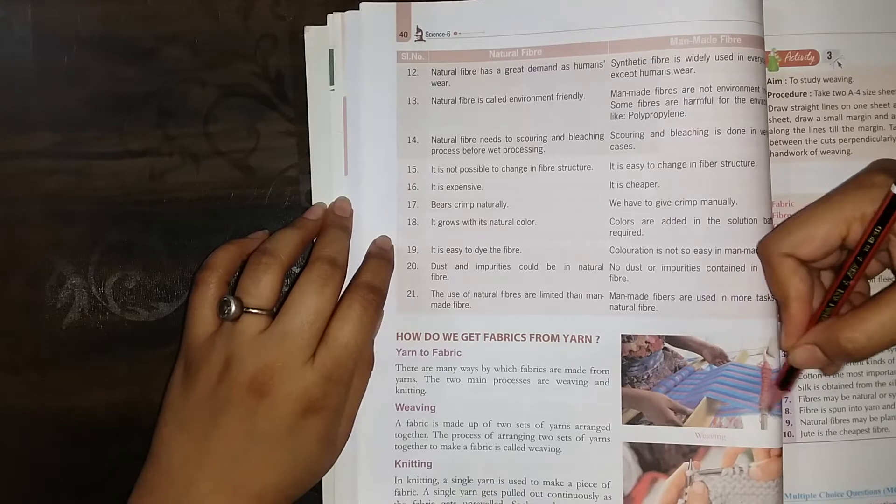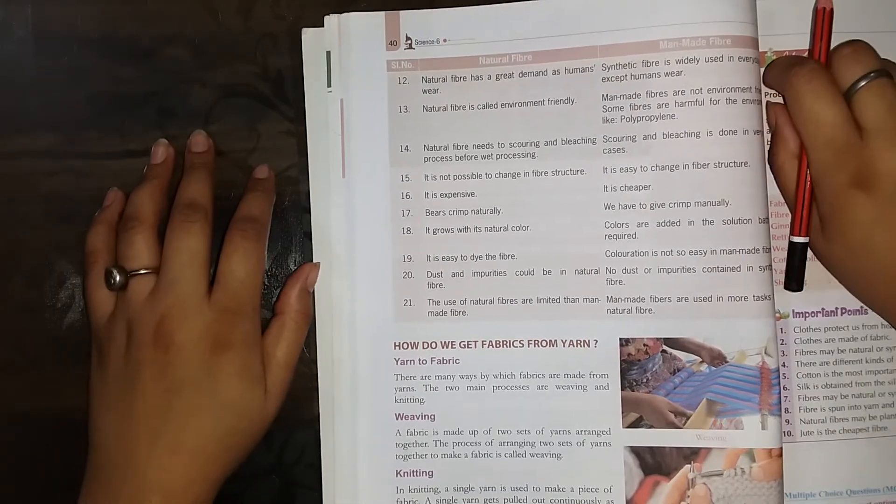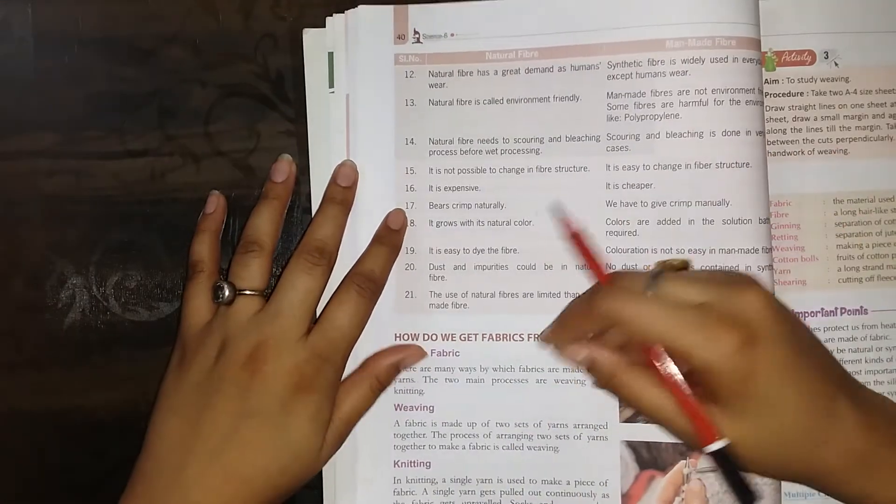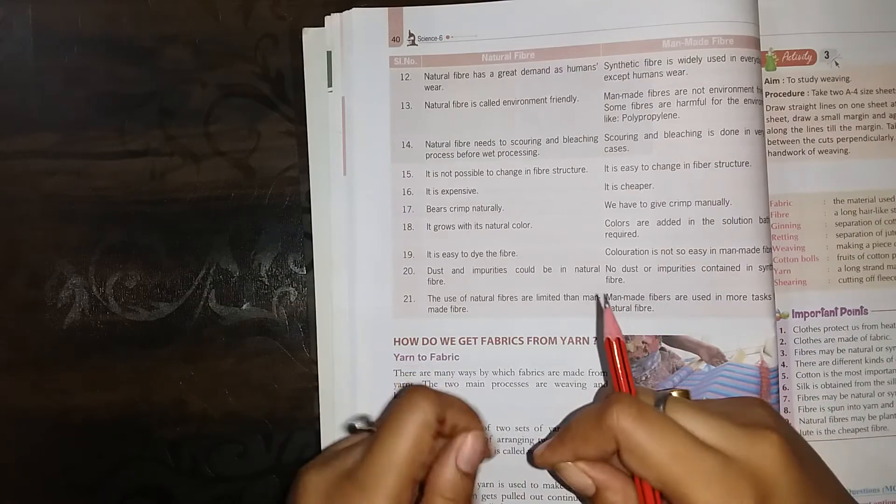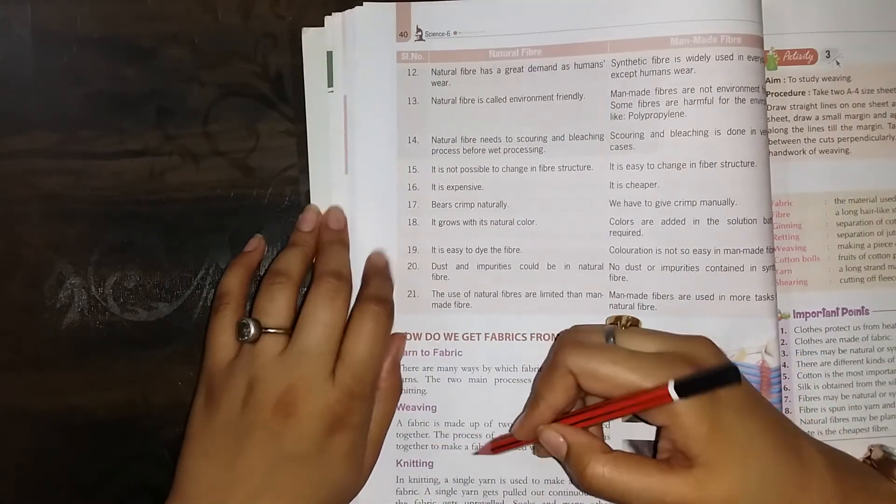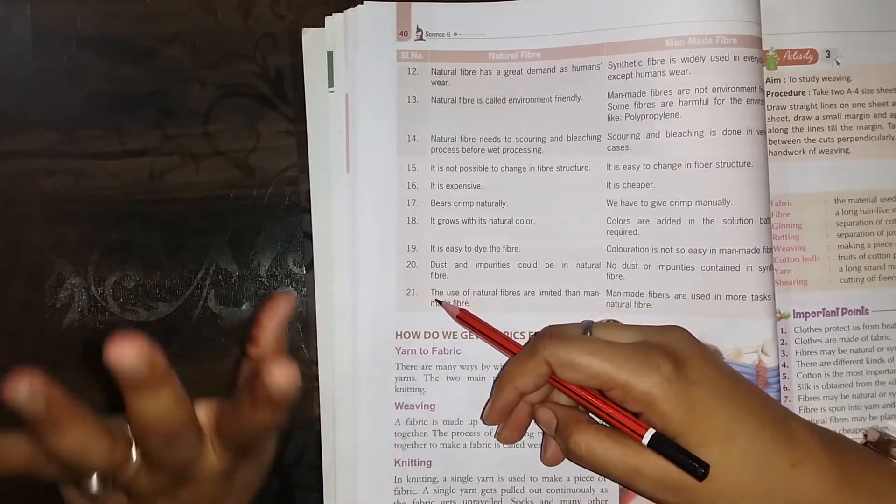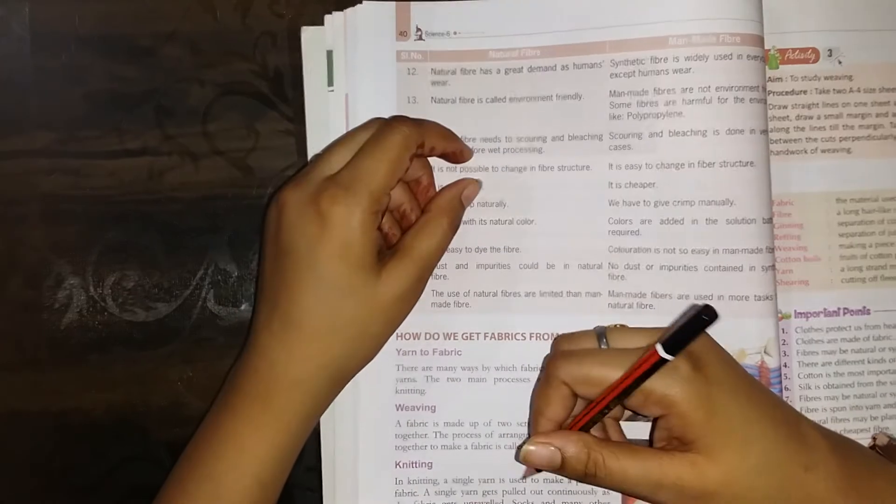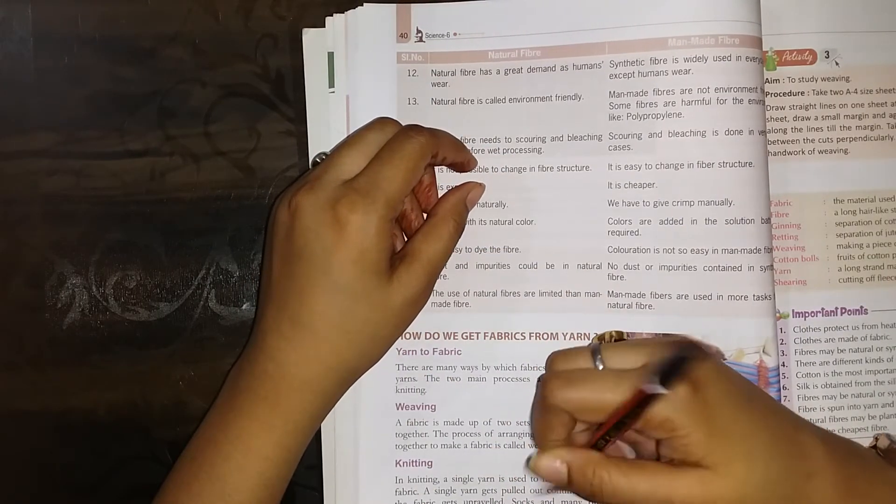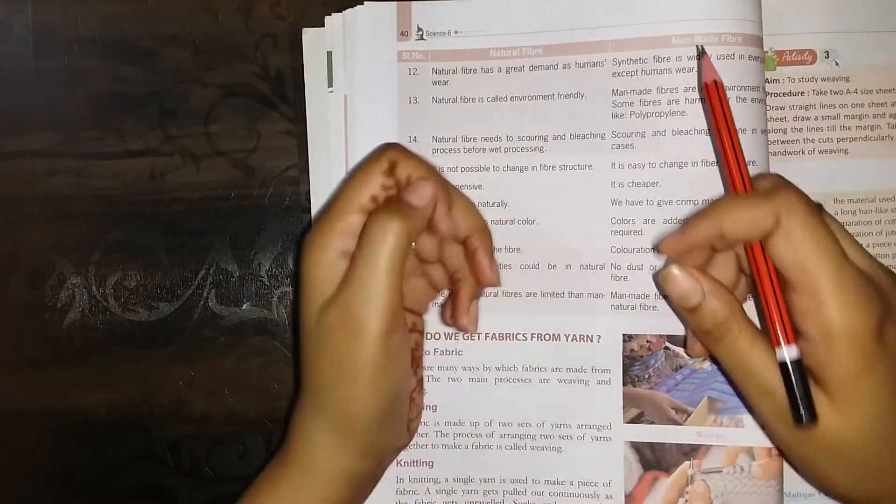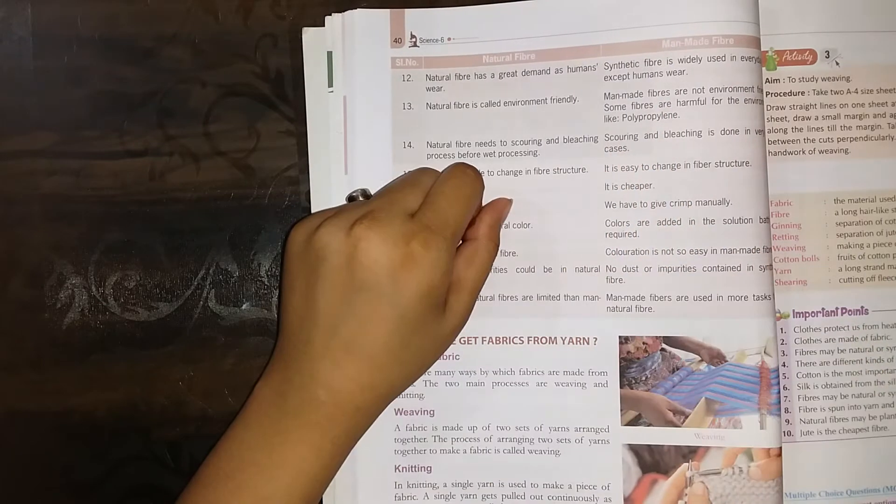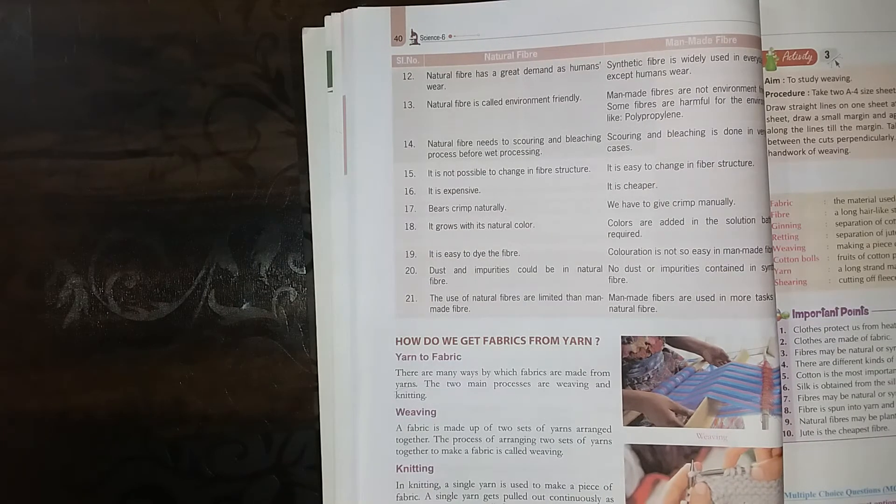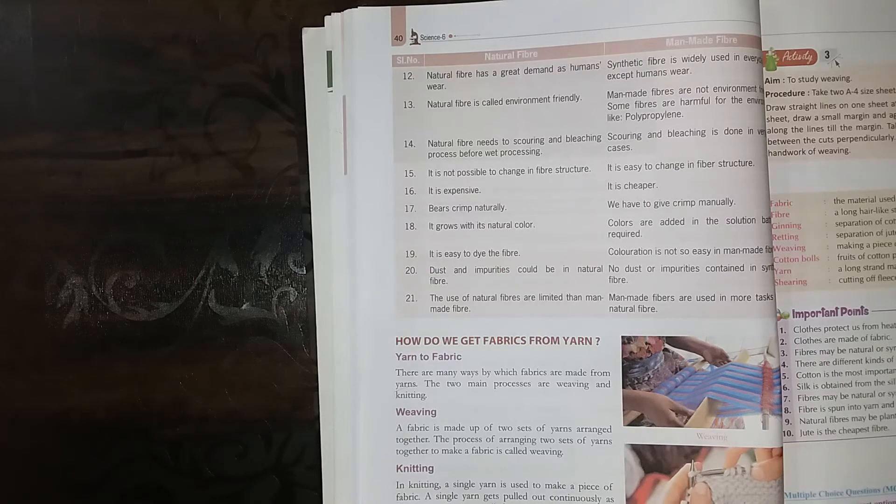Knitting: a single yarn is used to make a piece of fabric. As the fabric gets unraveled, it is made of a single yarn. Socks are made by knitting and different ways of knitting. You will know that clothes like sweater, socks, cap, etc. are all knitted.